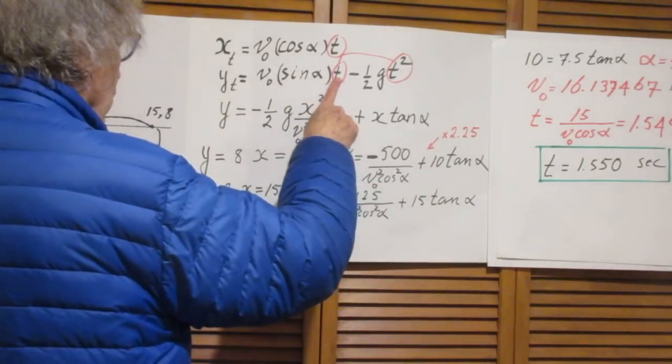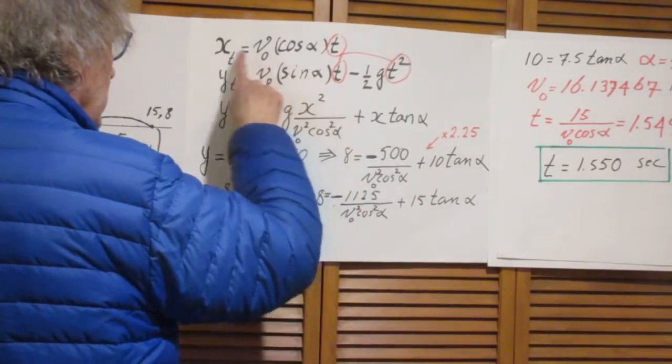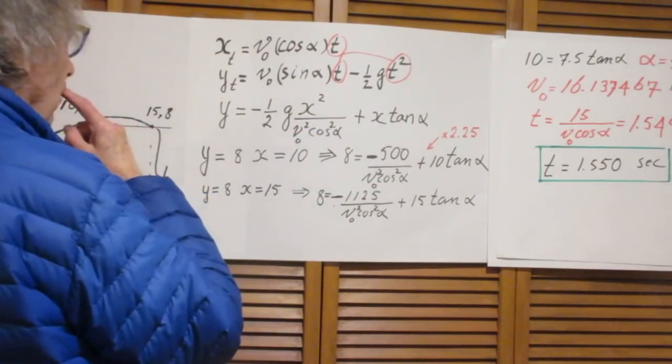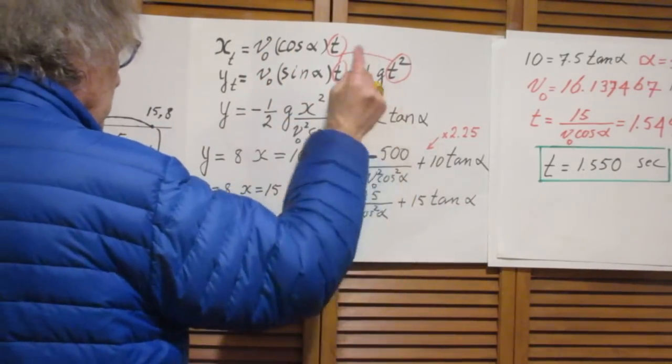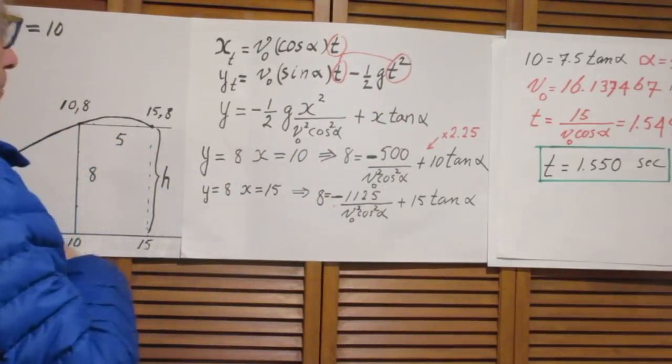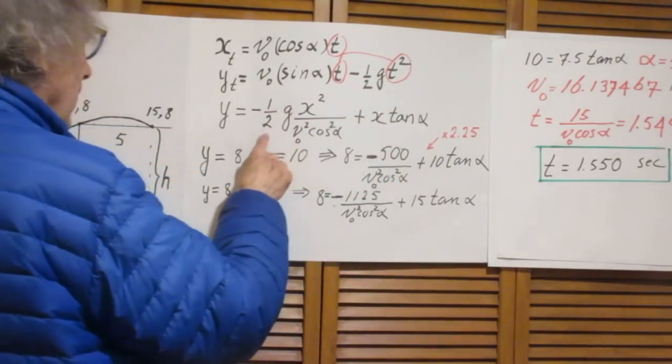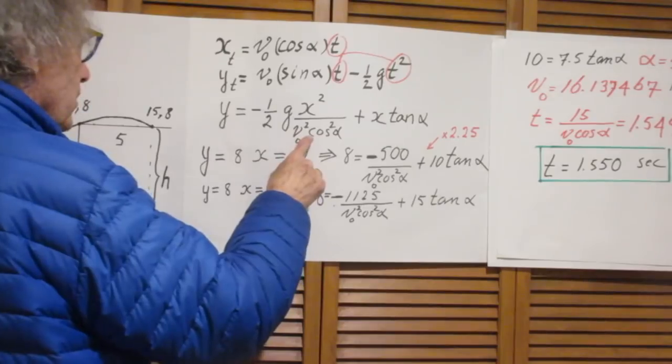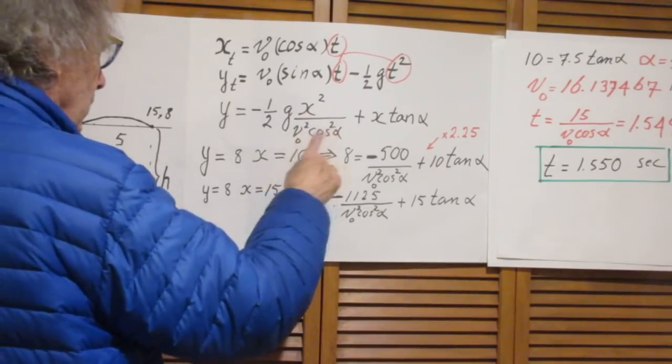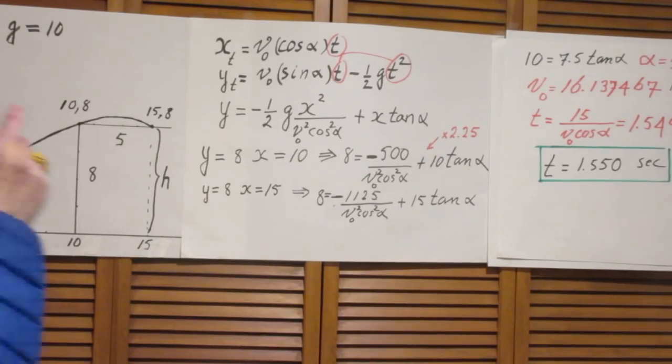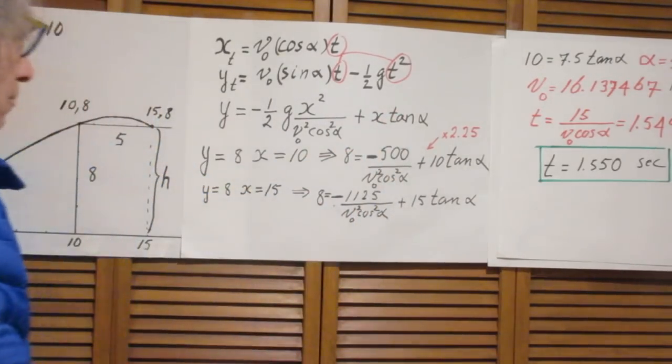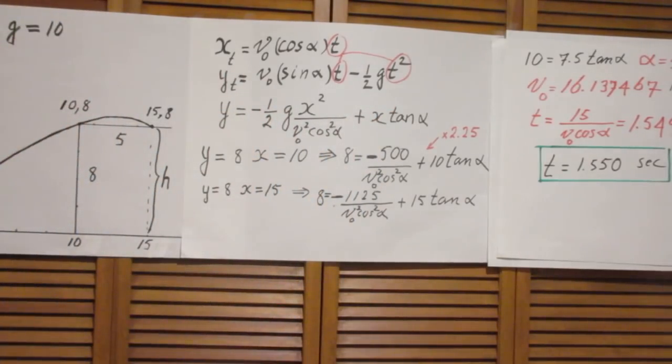So T is x divided by V0 cosine alpha. I'm going to put for T here x divided by V0 cosine alpha. So I lose the V0 and the sine alpha becomes tangent alpha. There it is. And here I get one half T minus sine of course x squared divided by V0 cosine alpha squared. So I no longer have T in here. I only have alpha and I have V0.